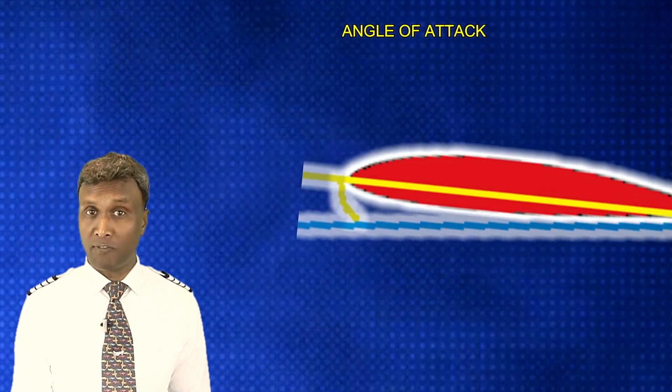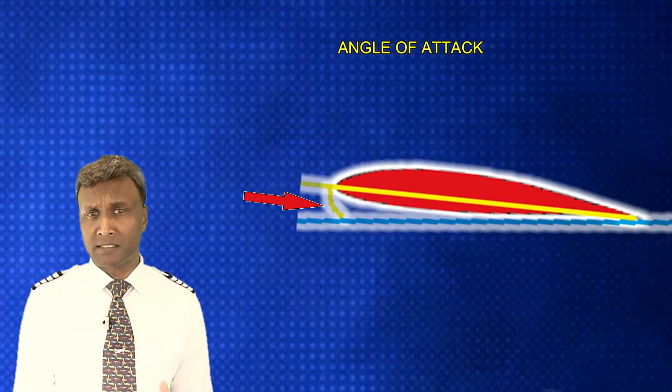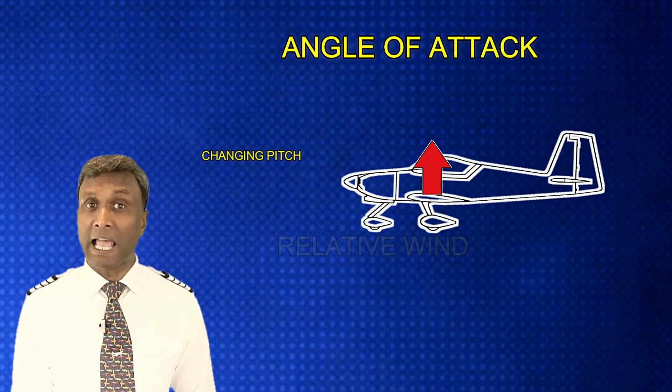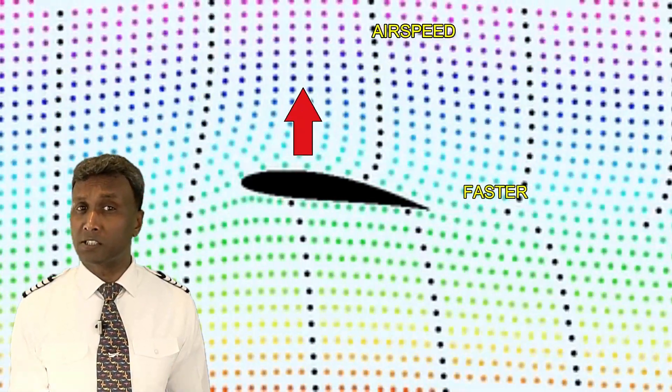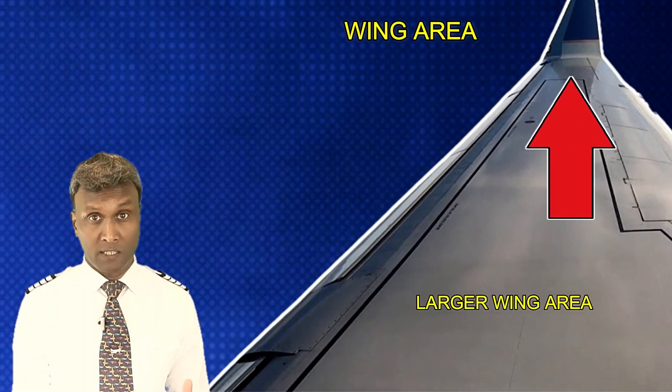Let's dive into the mechanics of lift and explore the factors that influence its magnitude. When it comes to generating lift, several key elements come into play: wing shape, angle of attack, air density, free stream velocity, and surface area. The angle of attack is the angle between the chord line of the wing and the oncoming air. Adjusting this angle allows pilots to control the lift produced. The faster an aircraft moves through the air, the greater the lift generated — that's why take-off and landing speeds differ from cruising speeds. A larger wing area provides more surface for air to interact with, resulting in increased lift.